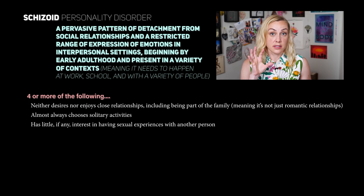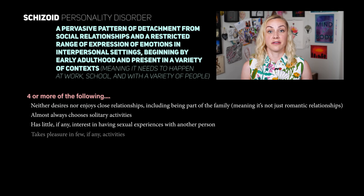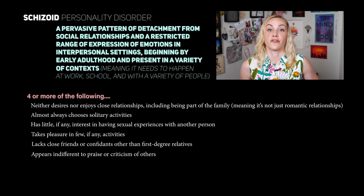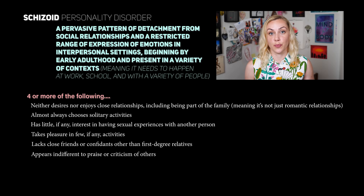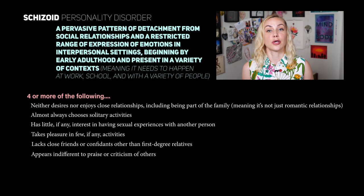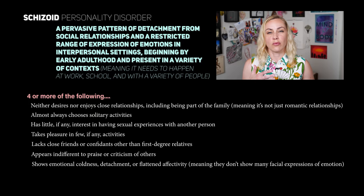Number four: they take pleasure in few, if any, activities. Number five: lacks close friends or confidants other than first-degree relatives. Number six: appears indifferent to the praise or criticism of others — meaning they don't really care if someone's saying nice or mean things about them. Number seven: shows emotional coldness, detachment, or flattened affectivity, meaning they don't really show many facial expressions of emotion. That's what flattened affect means — when we can be really upset but our face just looks completely flat.